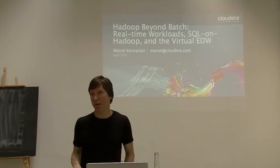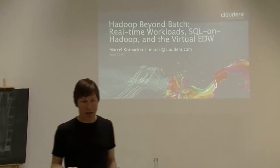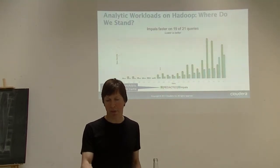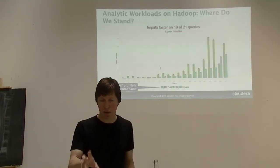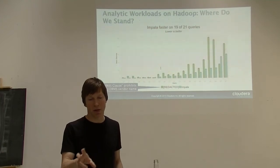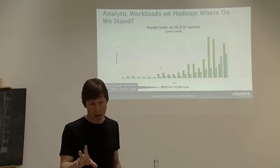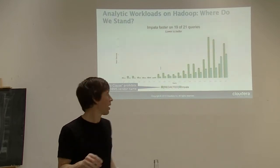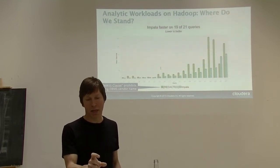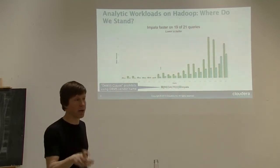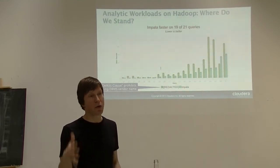This talk is about how to assemble data warehousing functionality in a Hadoop environment. Starting with a motivating example: this is a performance comparison of a commercial parallel database system running on columnar data against Impala running on columnar data—Parquet in this case. This is a subset of the TPCDS workload running on a 15-terabyte scale factor dataset on a 20-node cluster, showing the latencies of individual queries. You can get out of the Hadoop cluster running Impala on Parquet better performance in 19 out of 21 queries than the commercial competitor.